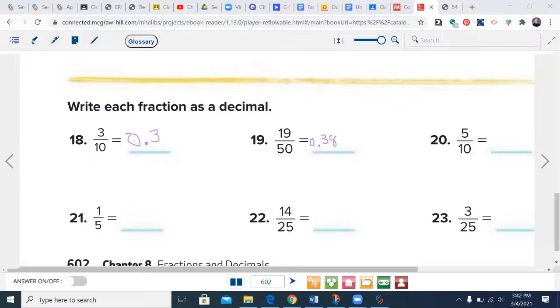Welcome back, let's see how you did. One over five is 20 over 100, so that would be 0.20 or 0.2. And this one is going to be 56 over 100, so 0.56.